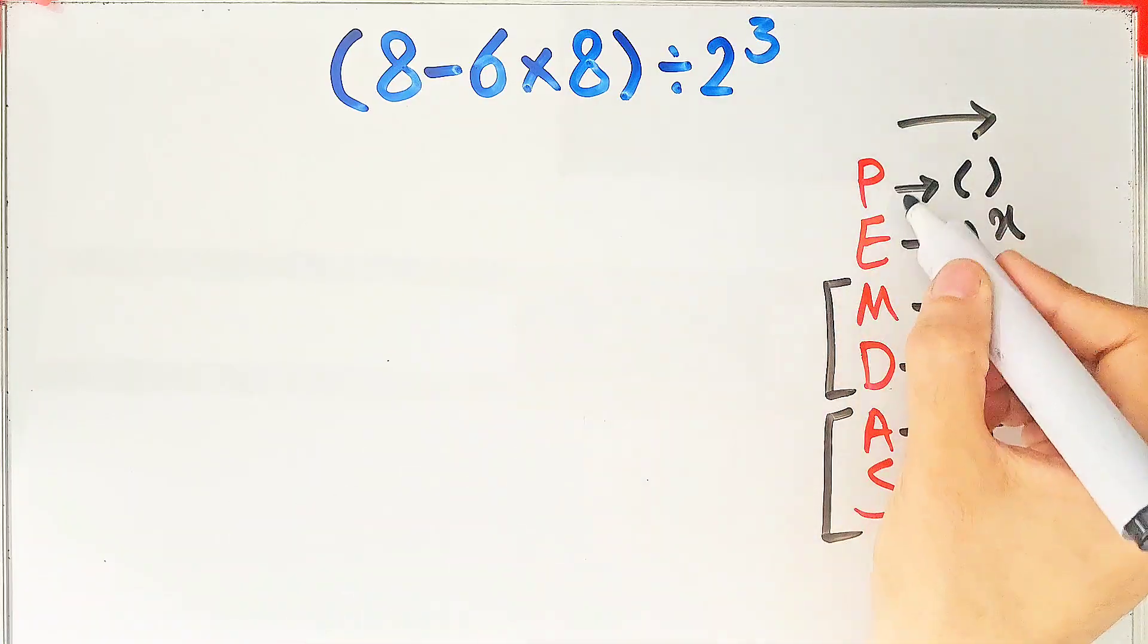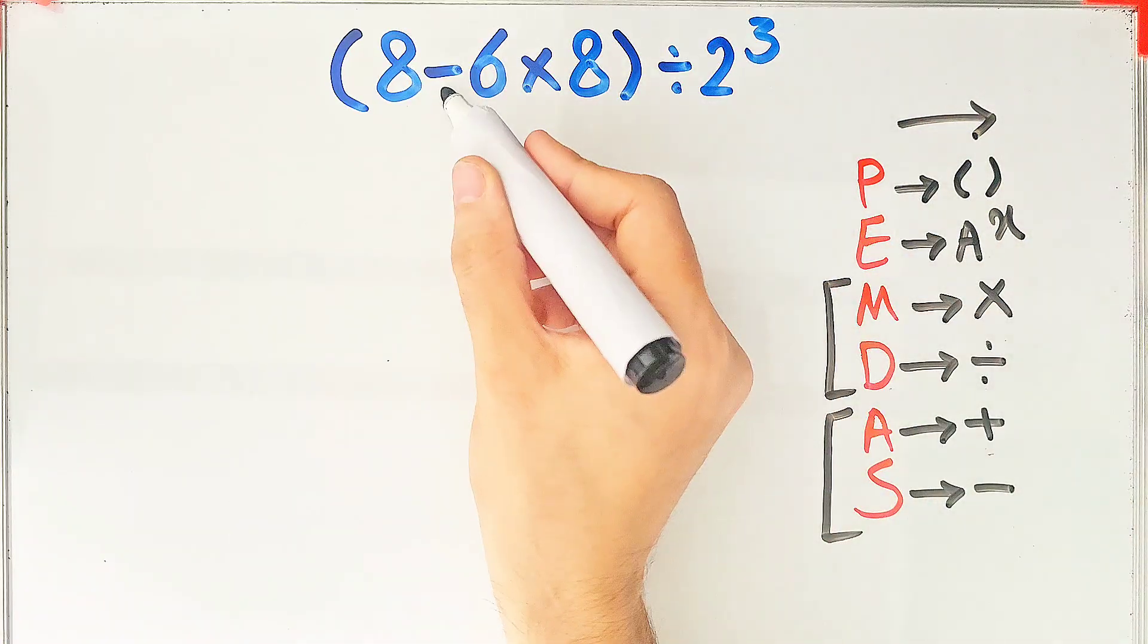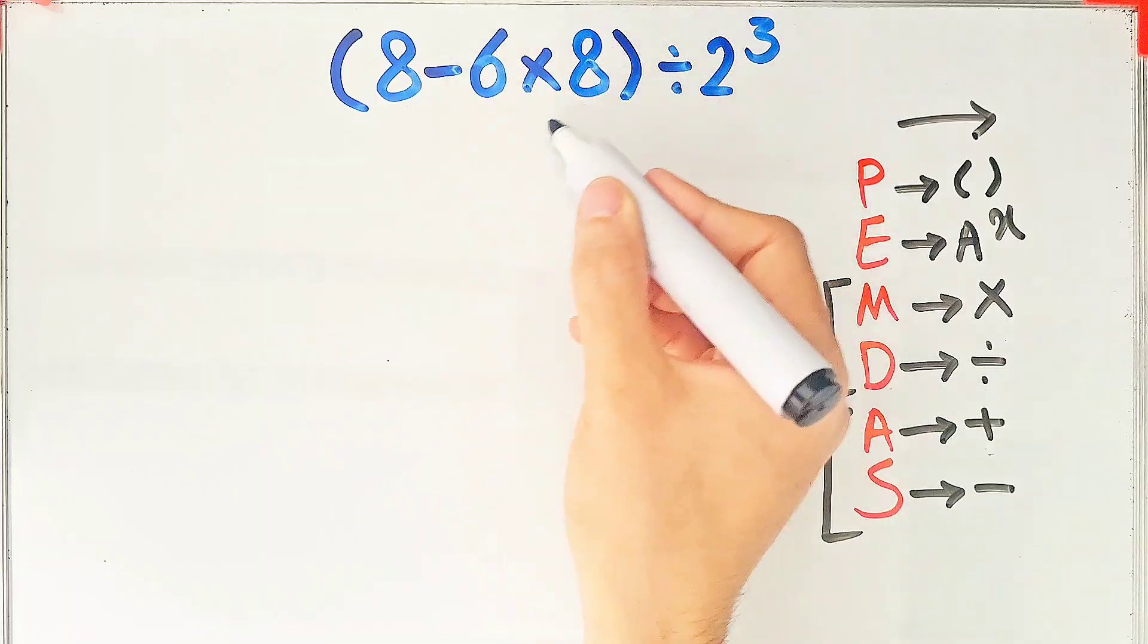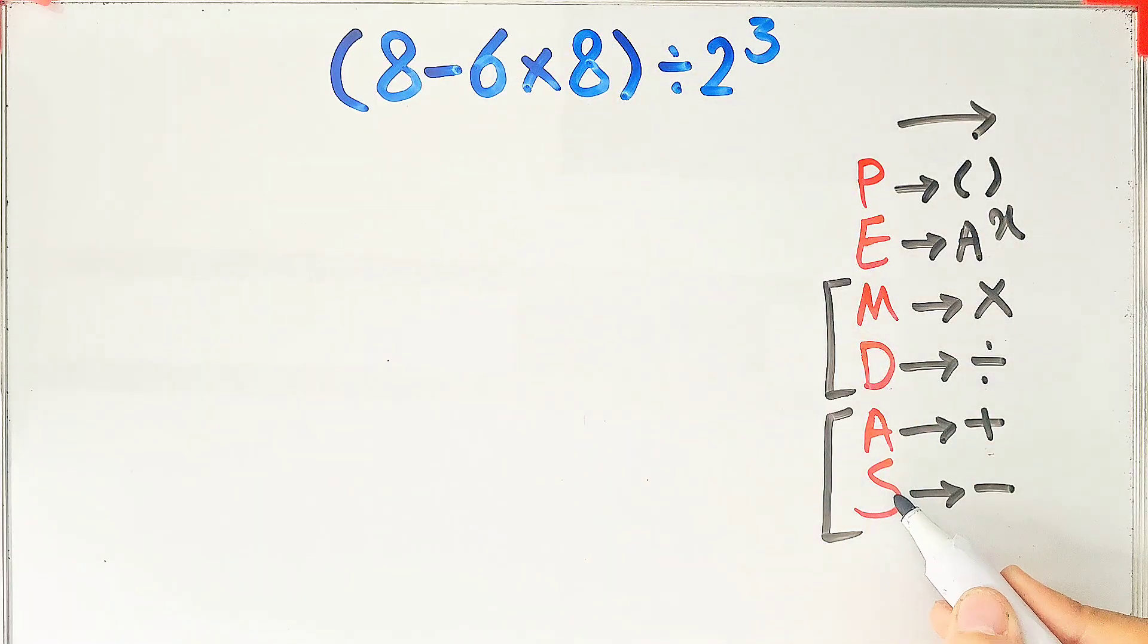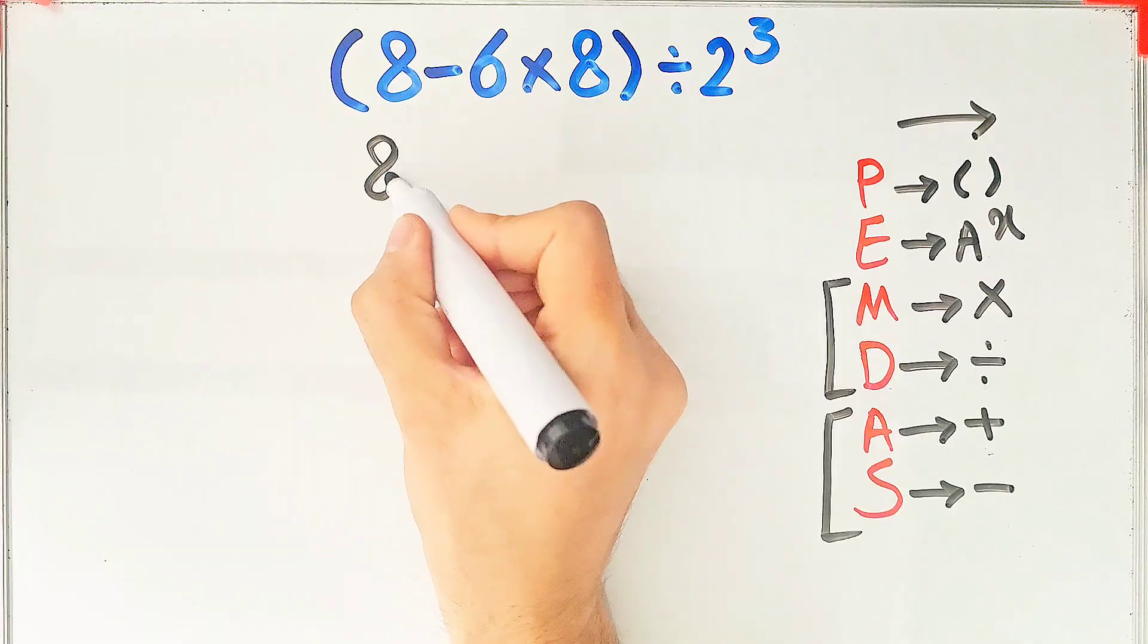According to the PEMDAS rule, first, we simplify the parentheses. Inside the parentheses, we have subtraction and multiplication. First, we simplify the multiplication. Because the multiplication has higher priority than subtraction.